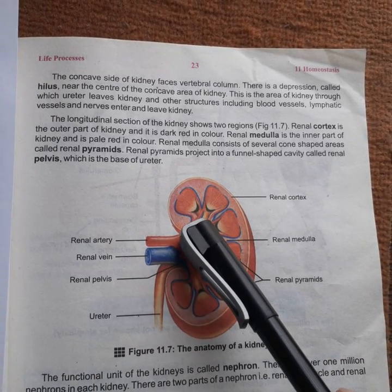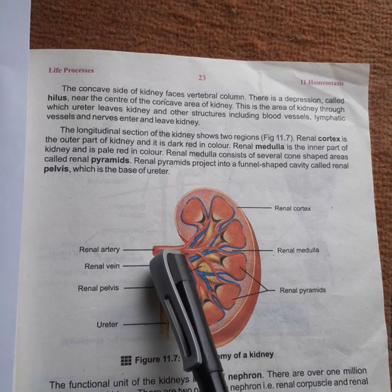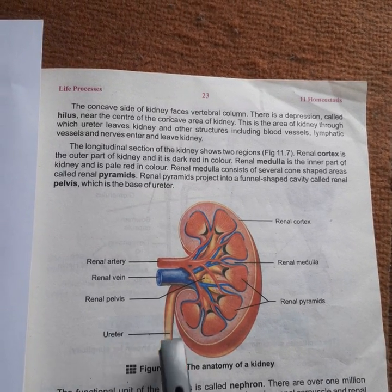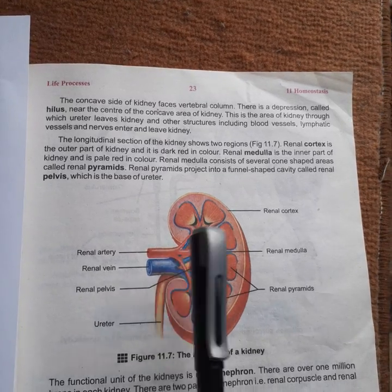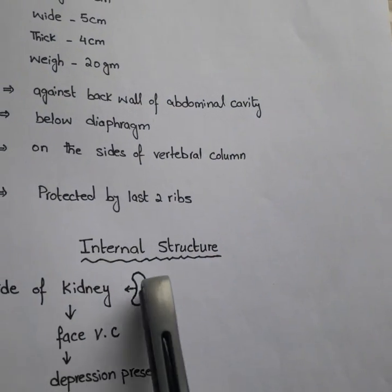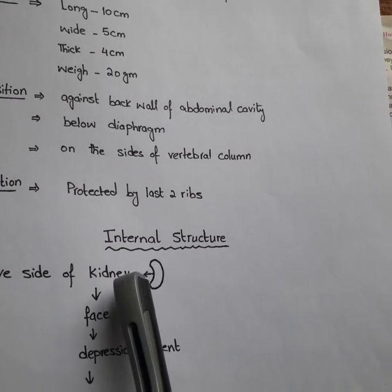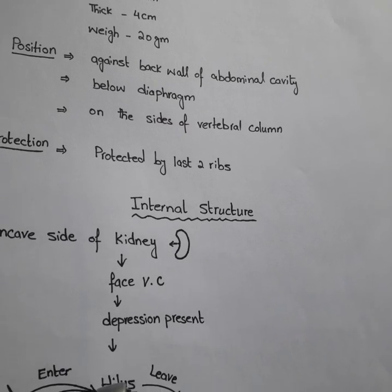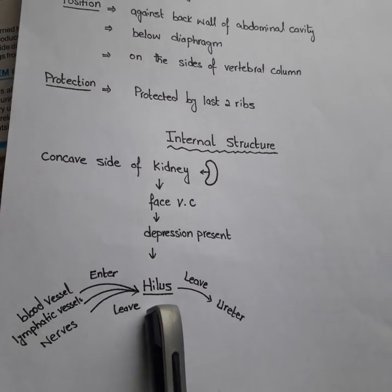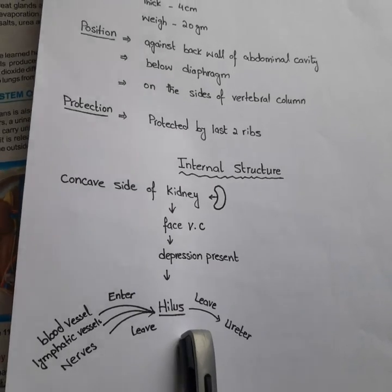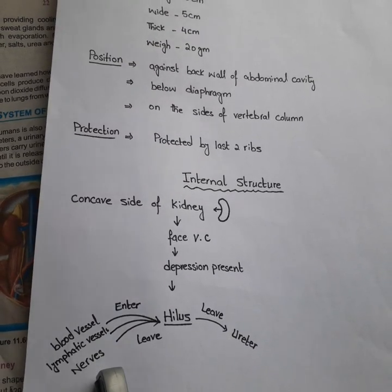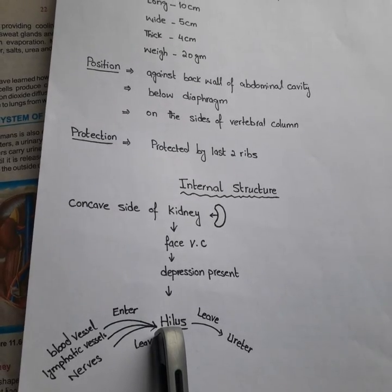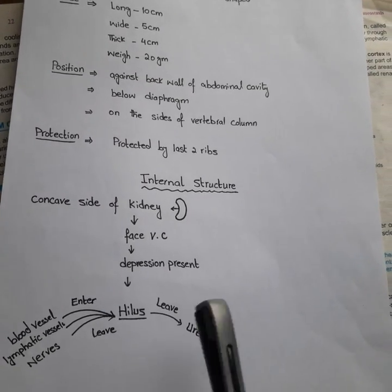This is the concave shape of the kidney and it faces the vertebral column. There is a depression on this concave side, as you can see. This depression is called the hilus. The hilus is the place where the ureter leaves the kidney, and where blood vessels, lymphatic vessels, and nerves enter and also leave the kidney.